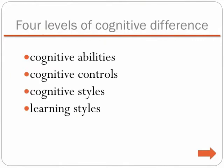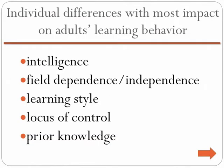Referring to the Jonassen and Grabowski table again, cognitive differences can be further classified into the subcategories of cognitive abilities, cognitive controls, cognitive styles, and learning styles. There is an extensive list of characteristics that could be included in each category, but the individual differences that most directly impact adults' learning behavior within the andragogical model are intelligence, field-dependence, independence, learning style, locus of control, and prior knowledge.